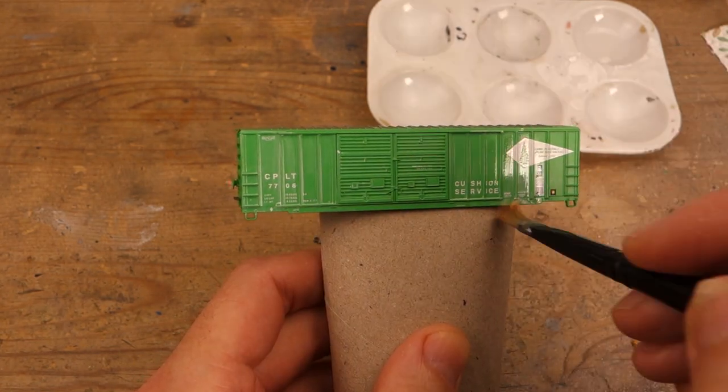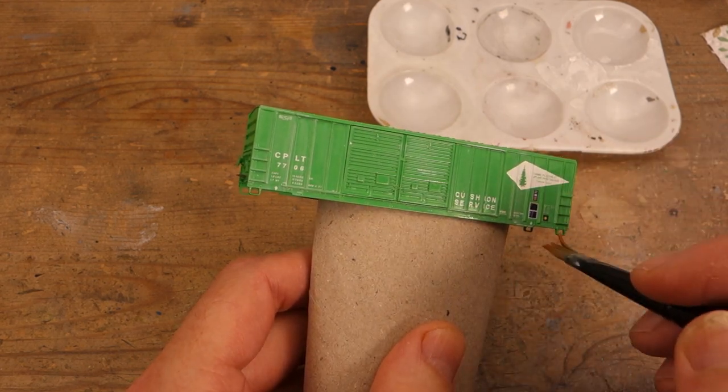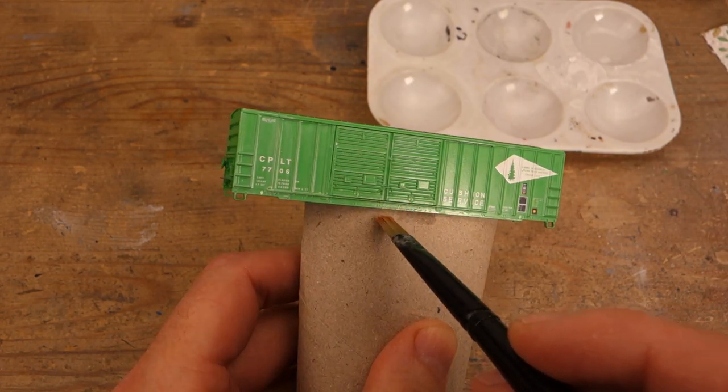This was a two step process starting with the usual fade using a wash of titanium white oil paint. I moved the paint around until I liked the effect and made sure to pick up any build up of the paint around the small details like ladders and levers.